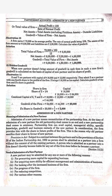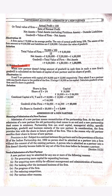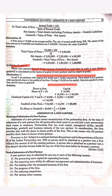Moving to the final method — Hidden Goodwill. When a new partner doesn't bring the amount of goodwill in cash, the firm's goodwill is calculated on the basis of the capital brought by the new partner. In the illustration, X and Y are partners with capitals of ₹16,000 and ₹12,000. They admitted Z for a 1/4 share of profit, and Z brings ₹16,000 as capital. We have to calculate the hidden goodwill.